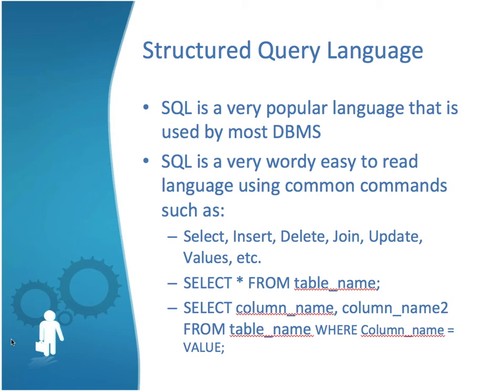A very simple query you see often is SELECT * (asterisk meaning all) FROM table-name — that selects all values so you can manipulate them. A slightly more complex statement would be: SELECT column-name, column-name-two FROM table-name WHERE column-name equals value. Basically, it's selecting two columns from a table where a column value equals whatever value we've set. SQL statements can get very complex based on joins, which apply those relationships to extract data from multiple locations.